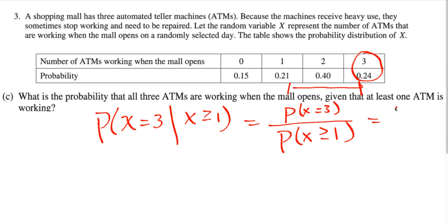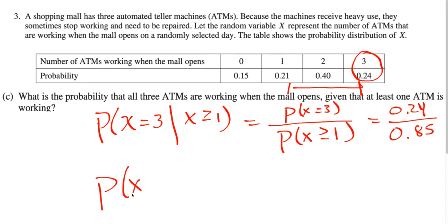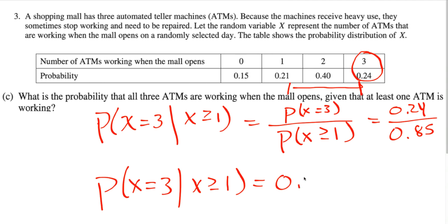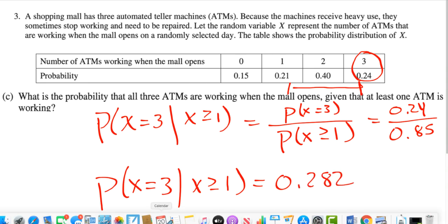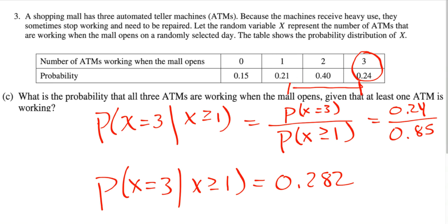Using our probability values, we plug it in: 0.24 divided by our answer from above, 0.85. The final answer is that P(X = 3 | X ≥ 1) is approximately 0.282. There's the answer for part C.